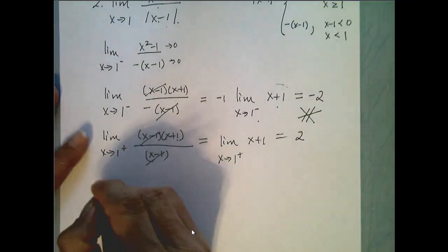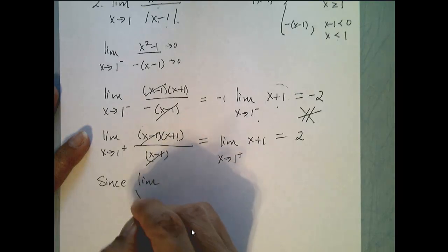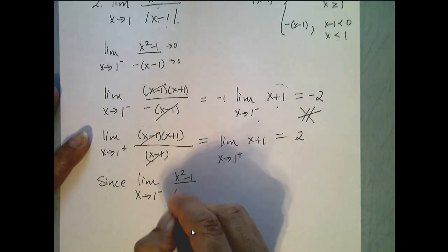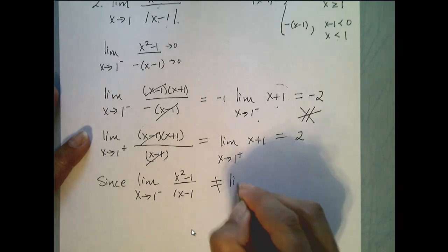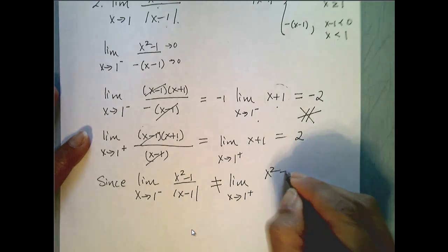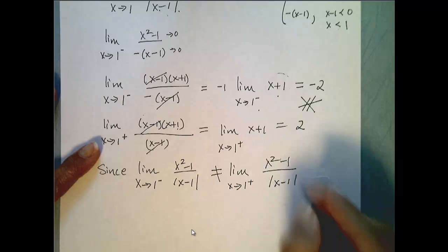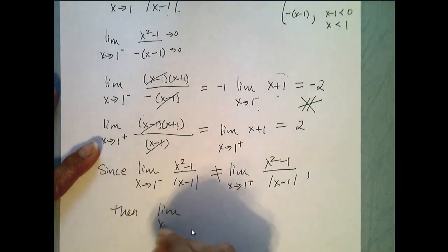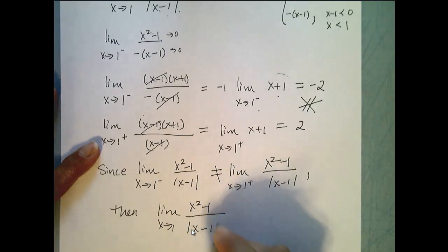Notice those two values are not equal. Since the limit as x approaches 1 from the left of x squared minus 1 over the absolute value of x minus 1 does not equal the limit as x approaches 1 from the right of x squared minus 1 over the absolute value of x minus 1, then the limit as x approaches 1 of x squared minus 1 over the absolute value of x minus 1 does not exist.